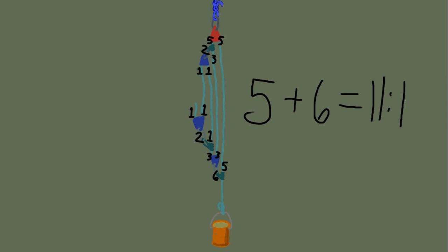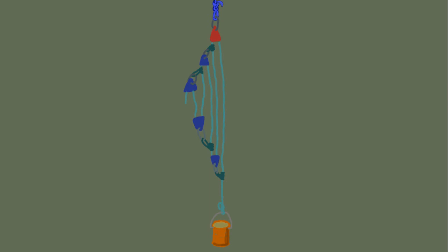Let's add one more pulley — this will be the last exercise for this video. Using the T-method: 1 in, 1 out equals 2; 1 in, 1 out equals 2. Then 2 plus 1 equals 3, so 3 in, 3 out equals 6. Then 3 plus 2 equals 5, so 5 in, 5 out becomes 10. Follow 5 up to the next rope grab: 6 plus 5 equals 11, so 11 in, 11 out. Follow 11 down to where it meets 10: 10 plus 11 equals 21. So using 5 pulleys, you now have a 21:1 raising system.